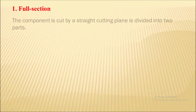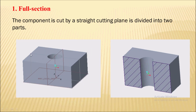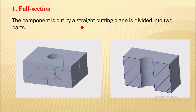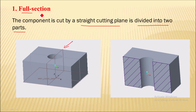Now let's move to the types of sectional view. The first type is the full section view. Here the component is cut by a straight cutting plane, which divides it into two parts. The full section is shown, which is why it is called a full sectional view. The section lines in this view are usually drawn at a 45 degree angle.